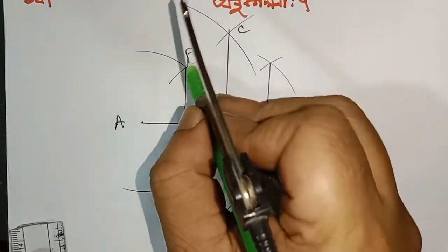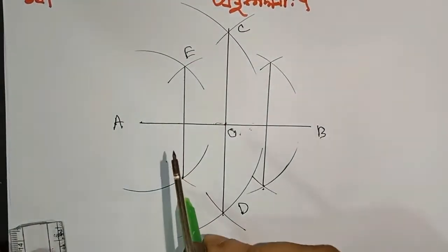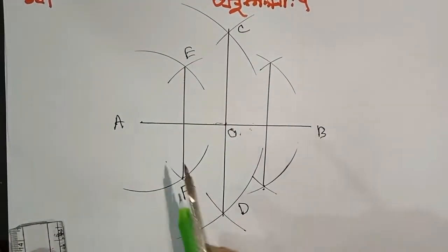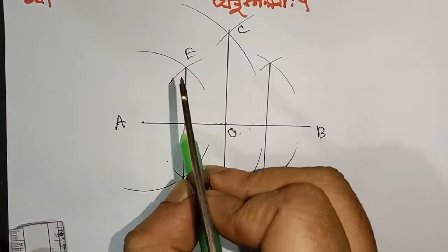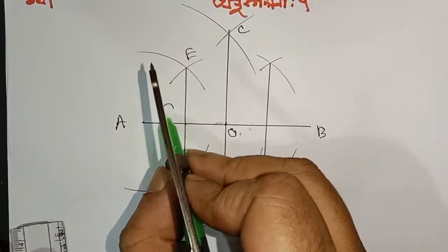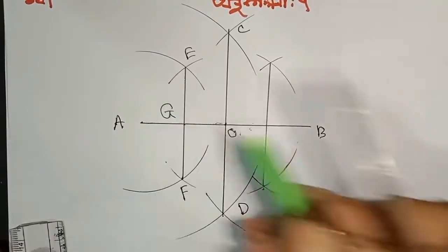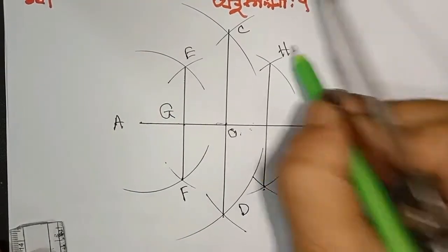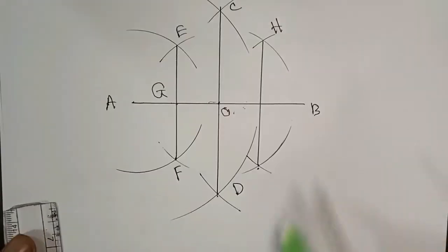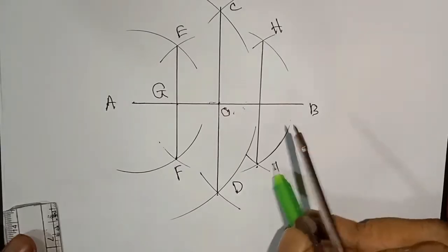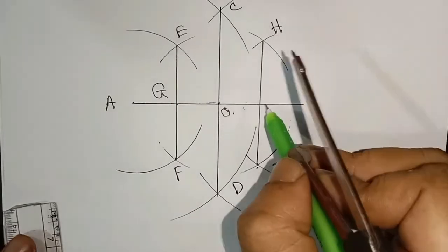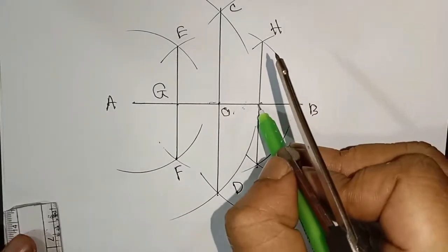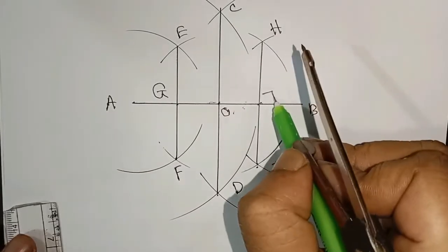Let's give the names: E, F, G, H, I, and J.